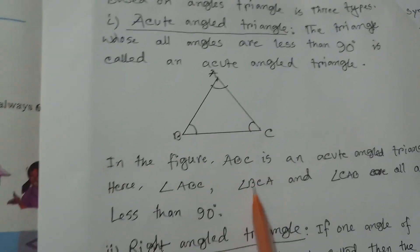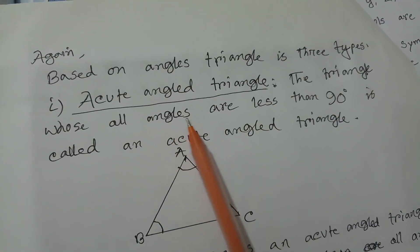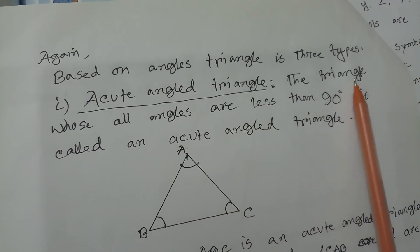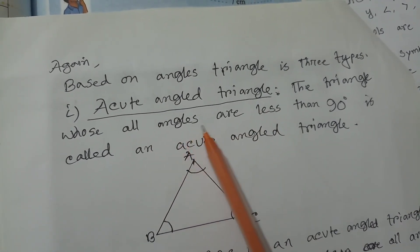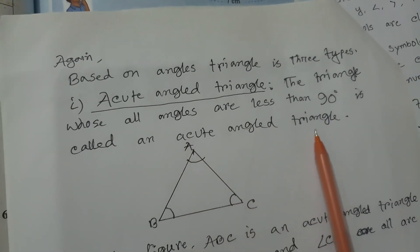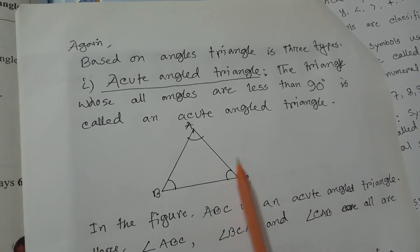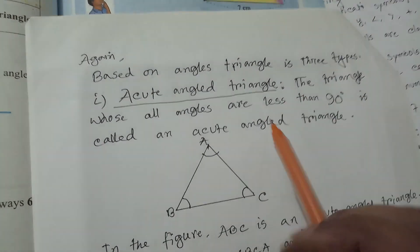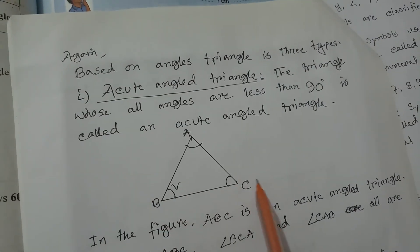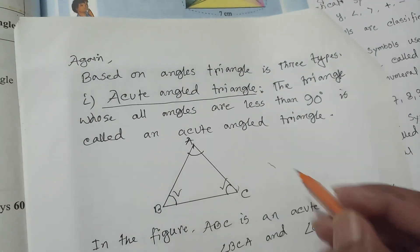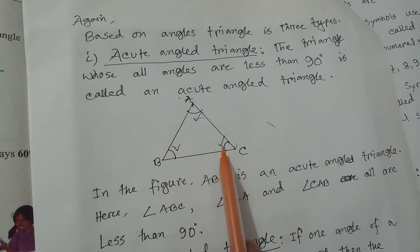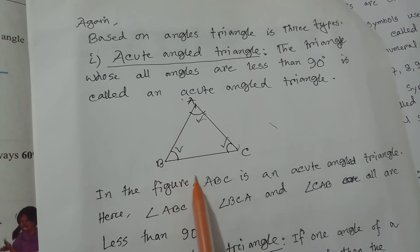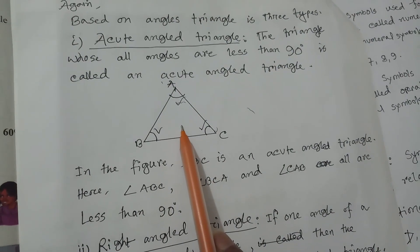Based on angles, triangle is three types: number one, acute angle triangle; number two, right angle triangle; and number three, obtuse angle triangle. The triangle whose all angles are less than 90 degrees is called an acute angle triangle. That's why this triangle is called an acute angle triangle.